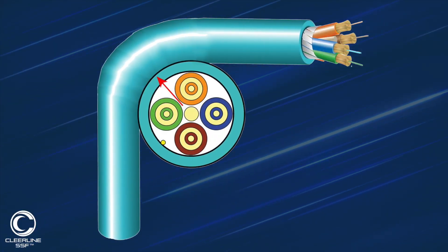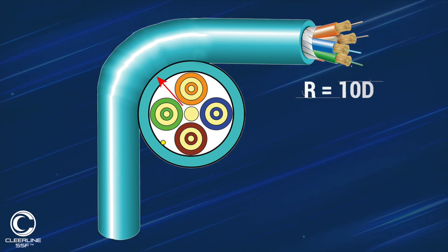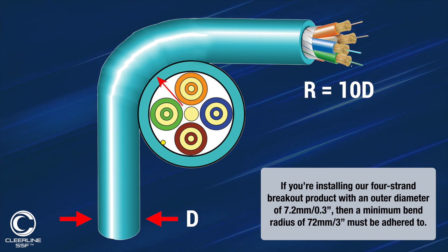The minimum bend radius for Clearline's breakout cable is 10 times the outside diameter of the jacket. So if you're installing our four strand breakout product with an outer diameter of 7.2 millimeters or 0.3 inches, a minimum bend radius of 72 millimeters or 3 inches must be adhered to.